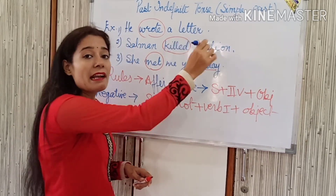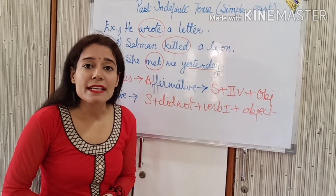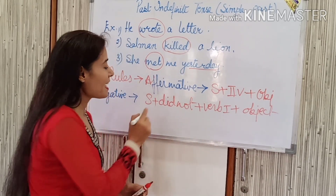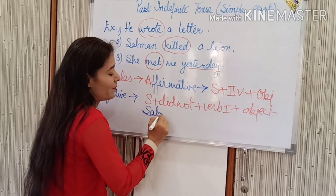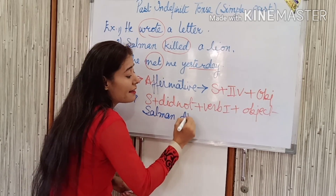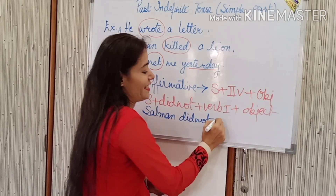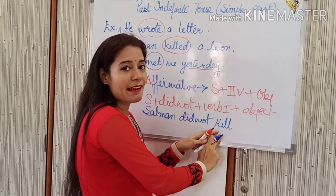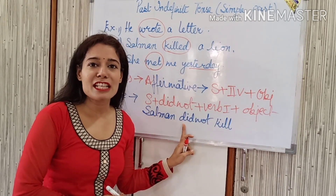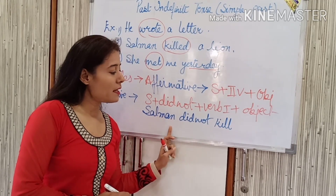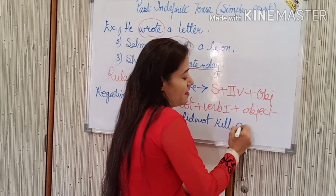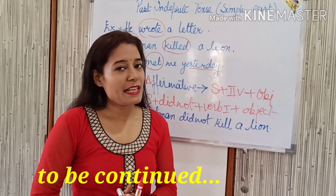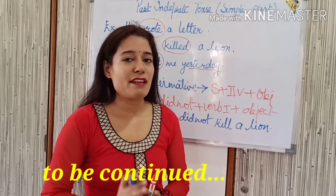For example: 'Salman killed a lion' is the affirmative sentence. But if we need to make it negative, then 'killed' changes — because we add 'did' for the negative sentence. So: Salman did not kill a lion. Now this is a negative sentence of past indefinite tense.